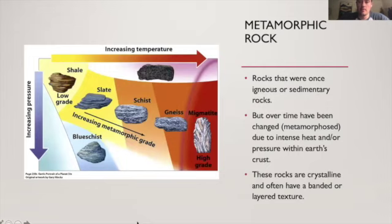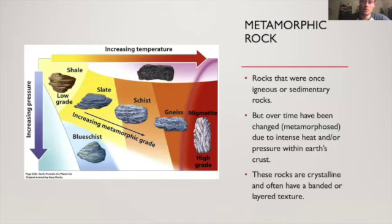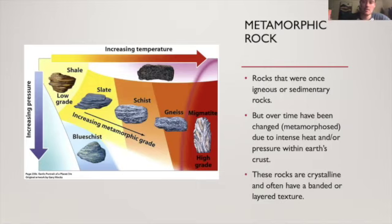The third type of rock is metamorphic rock. Metamorphic rocks are either igneous or sedimentary rocks that, over long periods of time, change or are metamorphosed due to intense heat and pressure underneath the Earth's crust. These are rocks that have been buried and pushed down underneath the Earth's crust. They are crystalline and often have banded layers. Granite would be an example of a metamorphic rock, and they have this layered kind of texture.